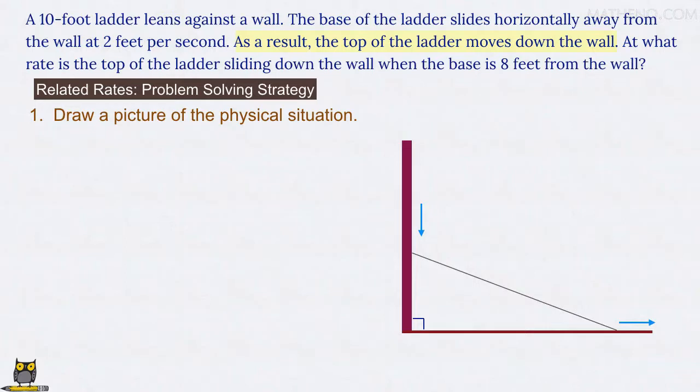Notice that the ladder never loses contact with the ground or the wall. The rate at which it slides horizontally is thus somehow related to the rate at which it slides down vertically, and our job will be to find that exact relationship.